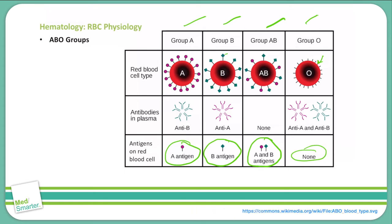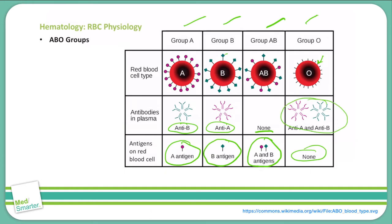We also see antibodies present in the plasma of all these different blood cell groups. With group A, you see anti-B antibodies, so those antibodies will attack any group B blood. With group B, you'll see anti-A antibodies, meaning it will attack anything with an A antigen. Group AB cannot have any antibodies because if it did, it would attack itself and would no longer be able to survive — so it does not have any antibodies in the plasma. Group O has both anti-A and anti-B antibodies, meaning it cannot receive any A or B antigens in the blood.